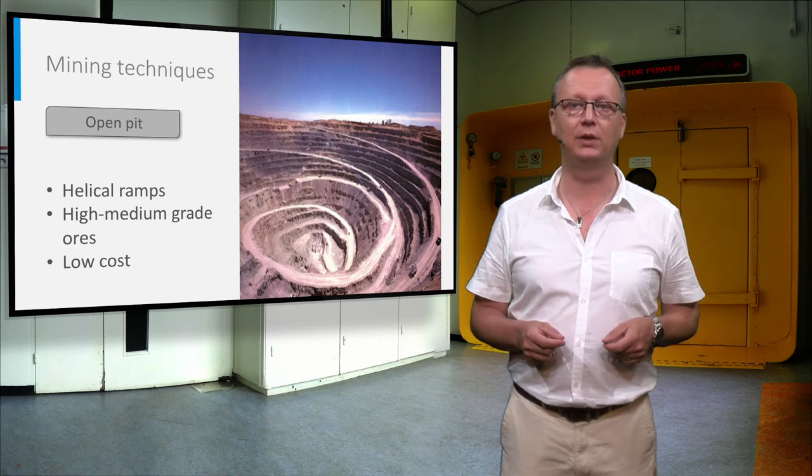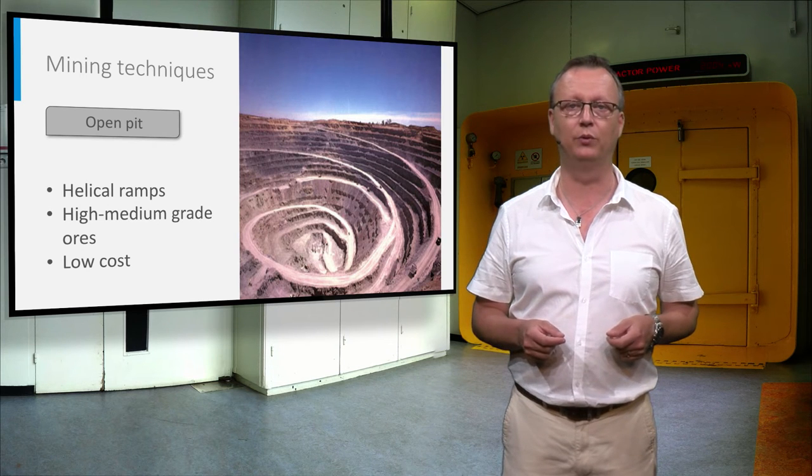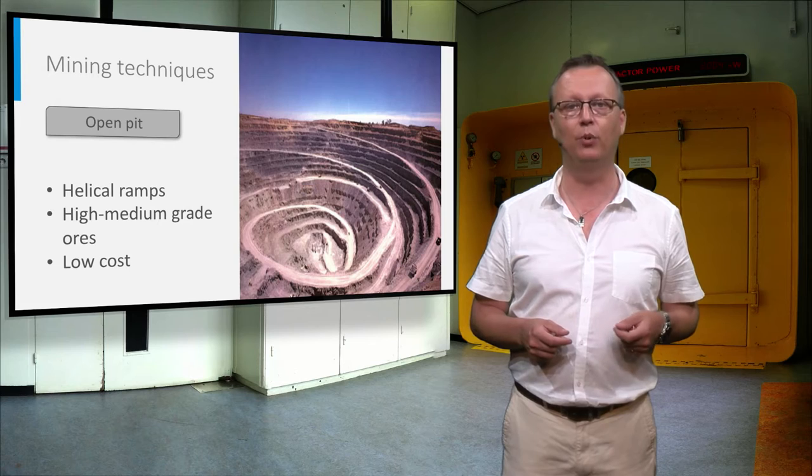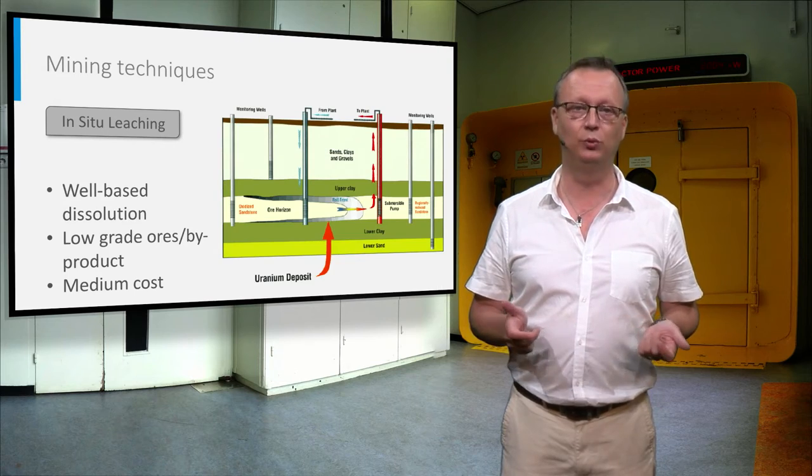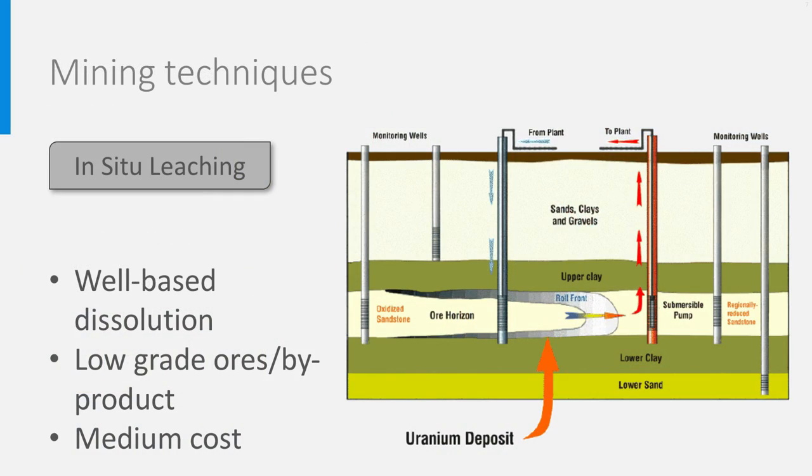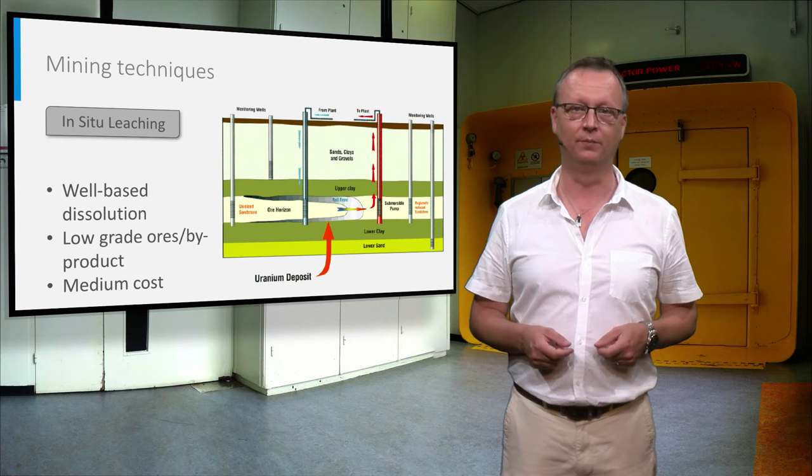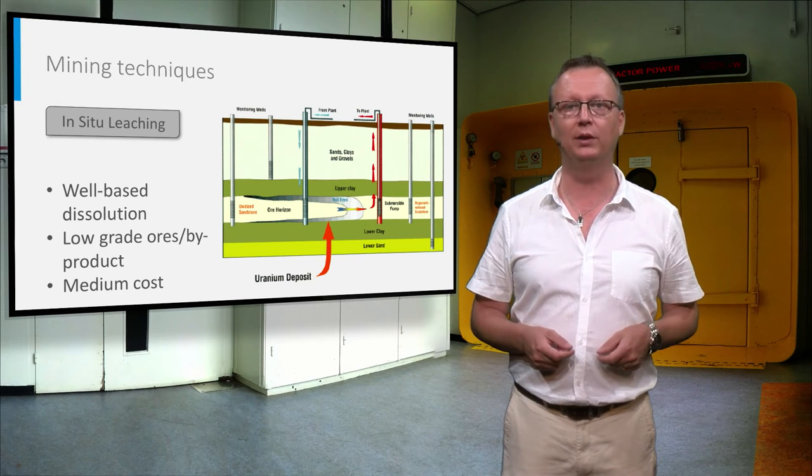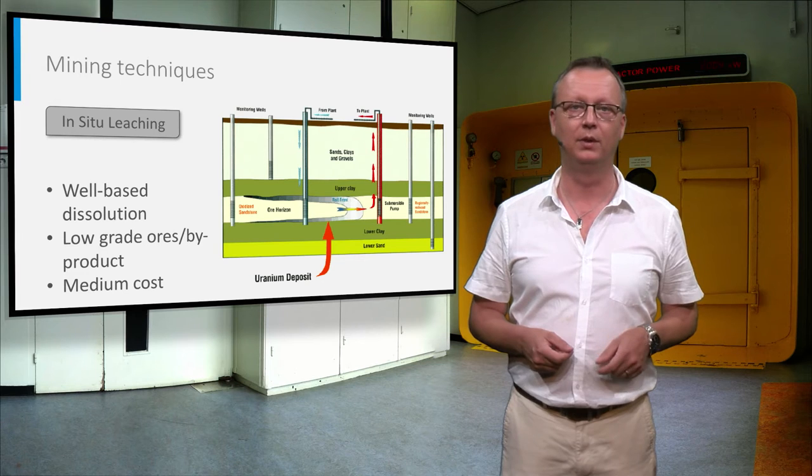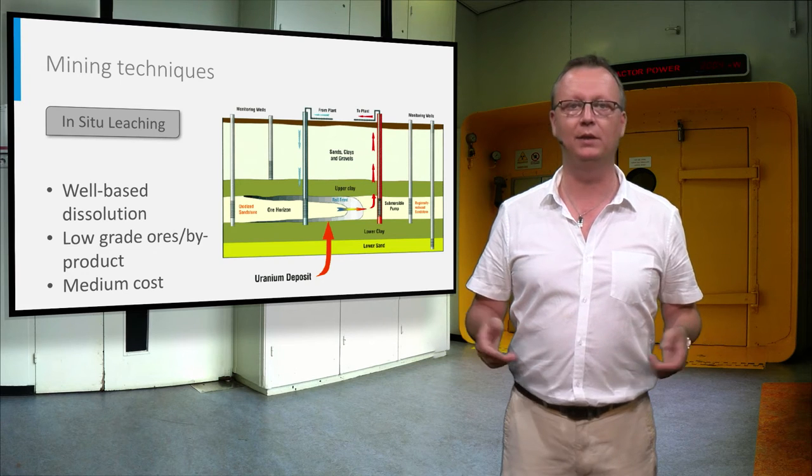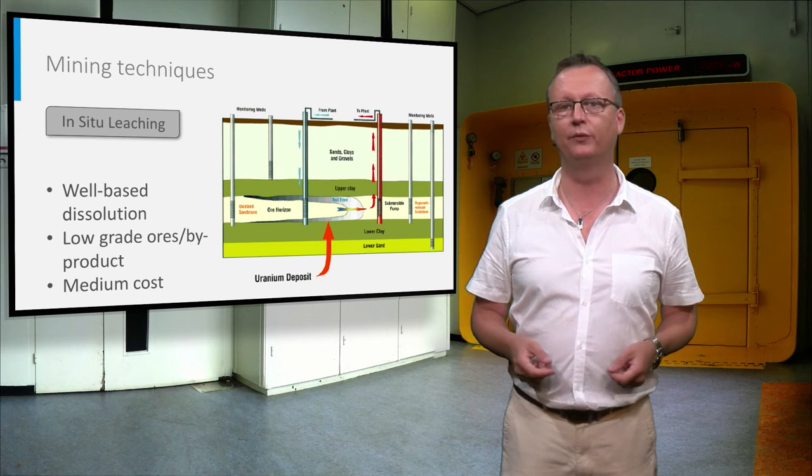Open pit mining is less costly and can thus be used for lower-grade ores. An increasingly popular method is in-situ leaching, in which an oxidized solution can bring poorly soluble uranium into solution, as we learned in the previous video, is pumped into and circulated through the ore body to dissolve the uranium. The Olympic Dam mine is the most well-known example of this.